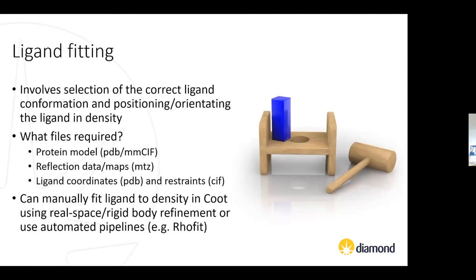For ligand fitting, it involves selection of the correct ligand conformation — ensuring we're working with the correct conformation to start with — then positioning and orienting that in the density. The files we use are the protein model PDB file from Dimple, the reflection data MTZ files from the beamline, and the ligand coordinates in CIF format generated by the restraint process. We can either manually fit this to the density using a software package called Coot, or use automated pipelines such as Rhofit from Global Phasing to introduce some automation.